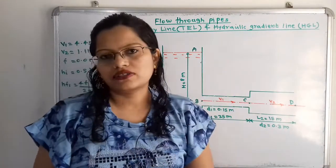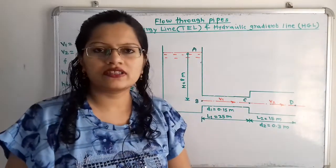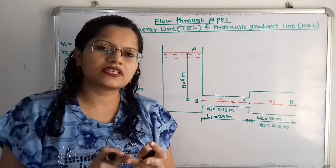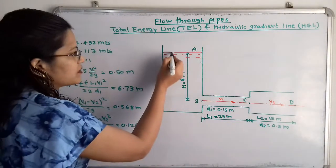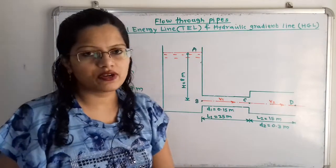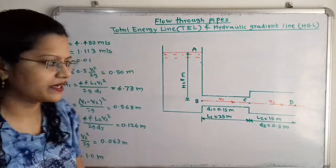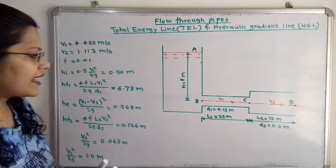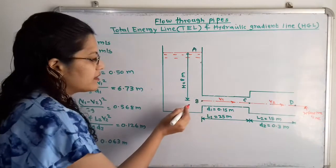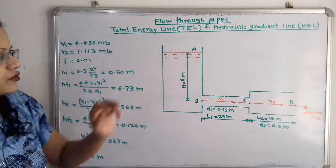Now we apply these head losses, starting at point A at the free surface of the water in the tank. Total energy = pressure head + kinetic head + datum head. At point A, pressure head is zero (open to atmosphere), kinetic head is negligible, and the datum head — measured from the reference line through the center of the pipe — is 8 meters. So total energy at point A = 8 meters. We plot this as point E.